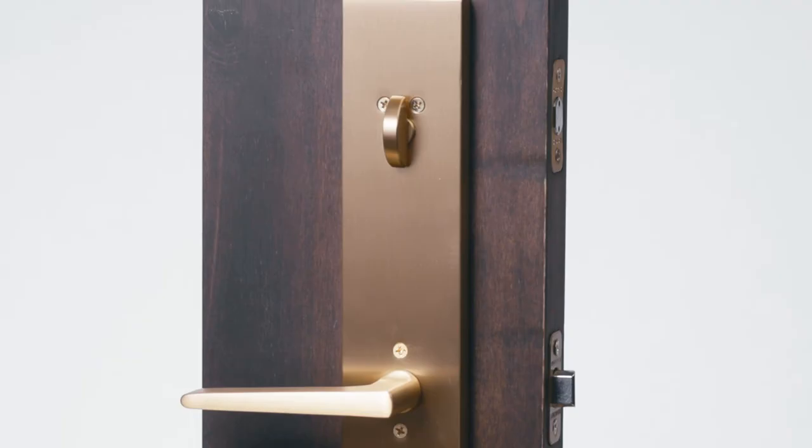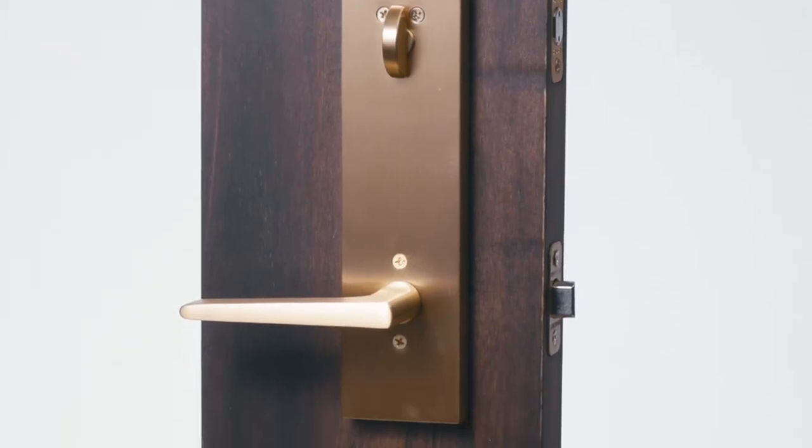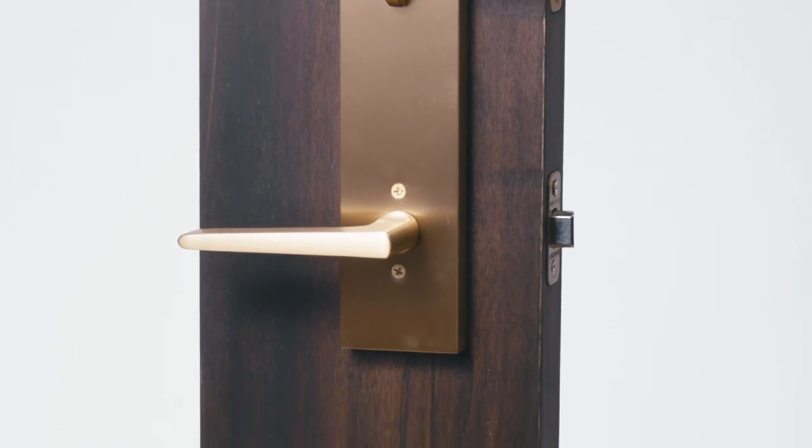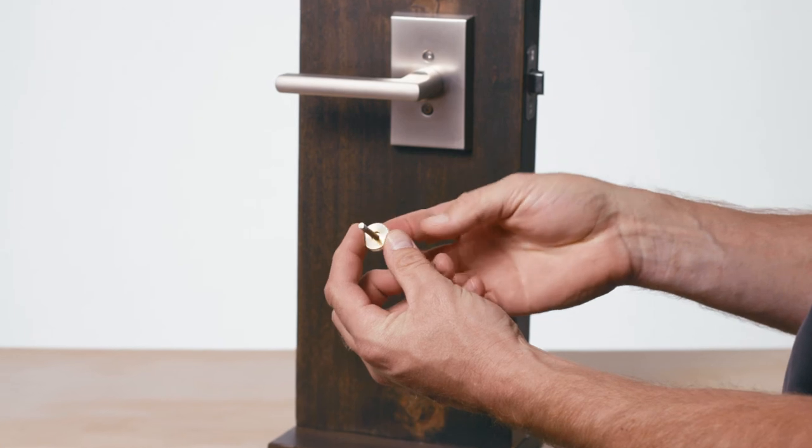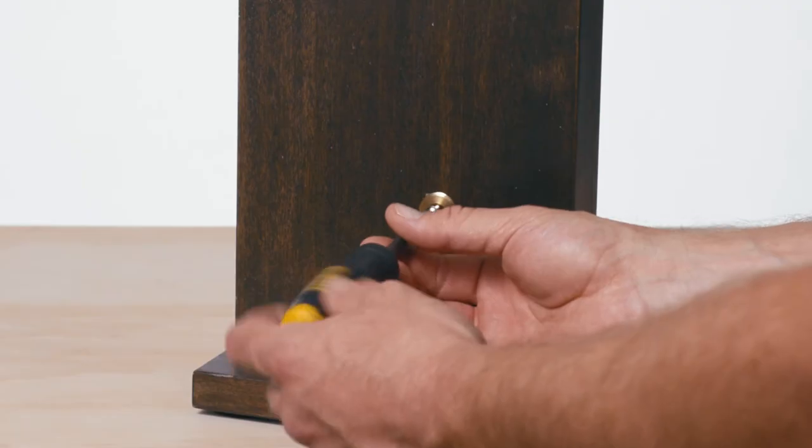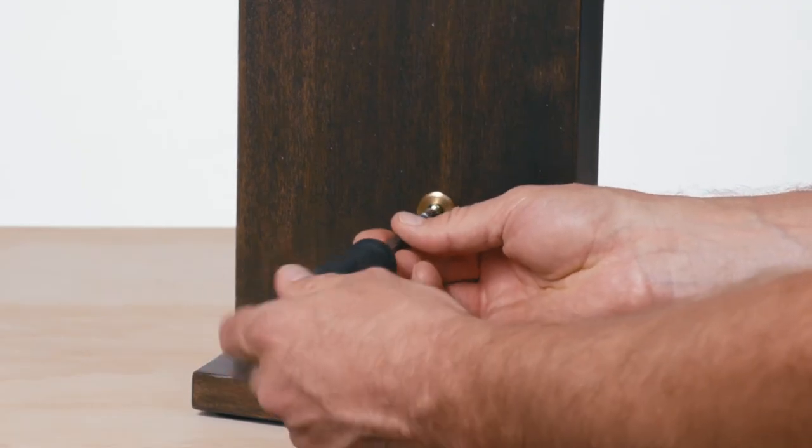If you have a separate knob or lever trim, install the one and a quarter inch machine screws above and below. Now let's finish the install. First, place the screw through the threaded washer, then screw it into the screw post and hand tighten.